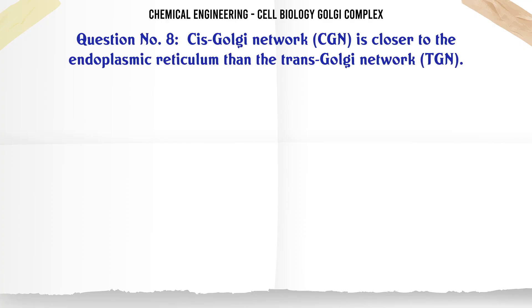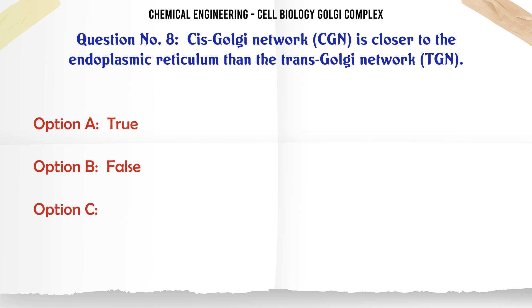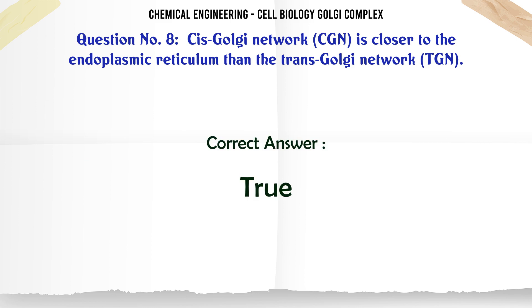Cis Golgi network (CGN) is closer to the endoplasmic reticulum than the trans Golgi network (TGN). A) True, B) False. The correct answer is True.